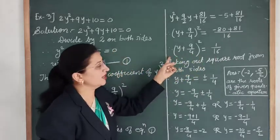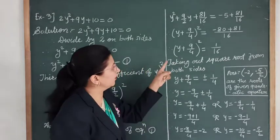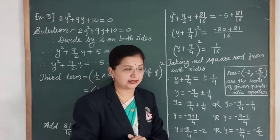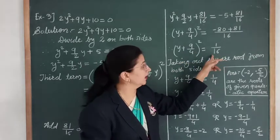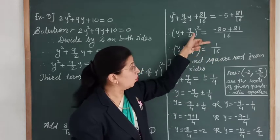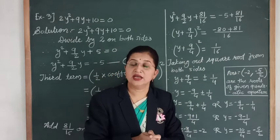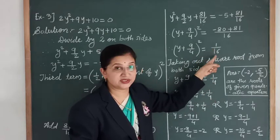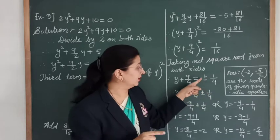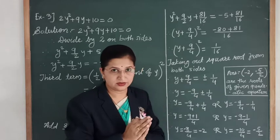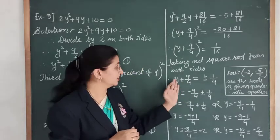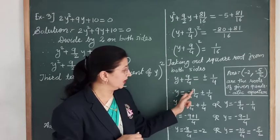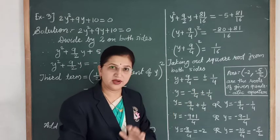Taking the square root from both sides: y + 9/4 = ±√(1/16). Since 1 and 16 are both perfect square numbers, √(1/16) = 1/4. Don't forget to write both the positive and negative signs. So y + 9/4 = ±1/4. Transferring 9/4 to the RHS, it becomes minus 9/4. So y = -9/4 ± 1/4.